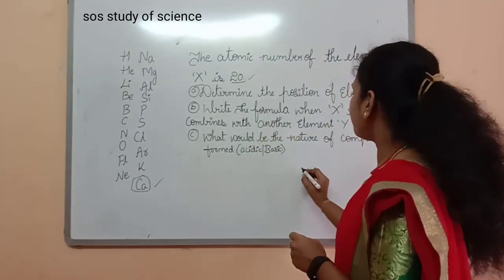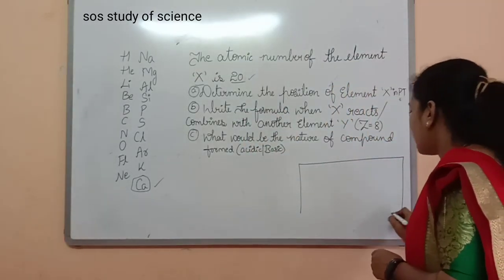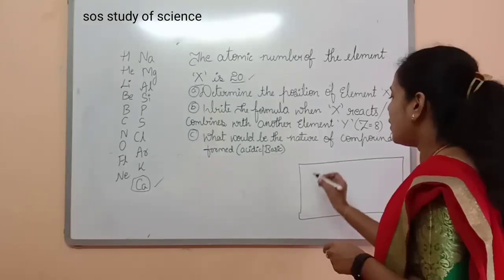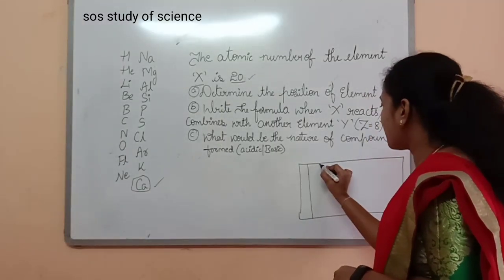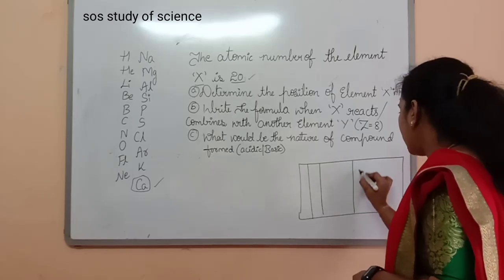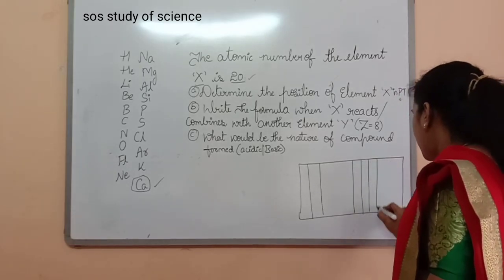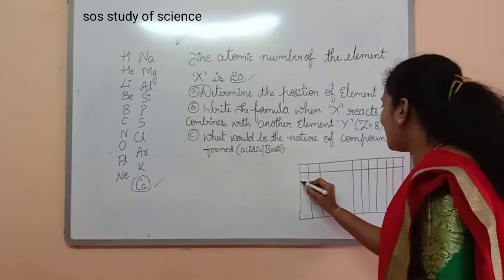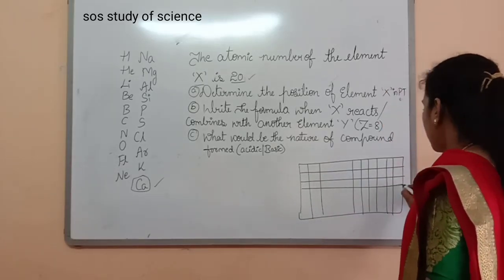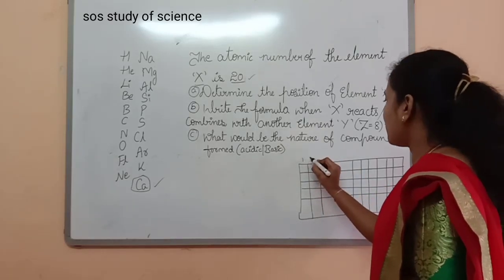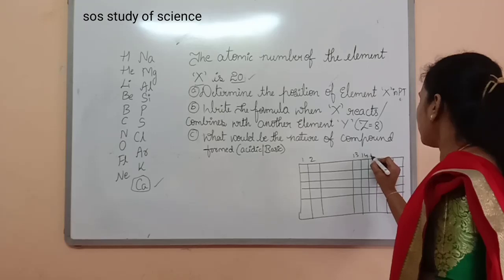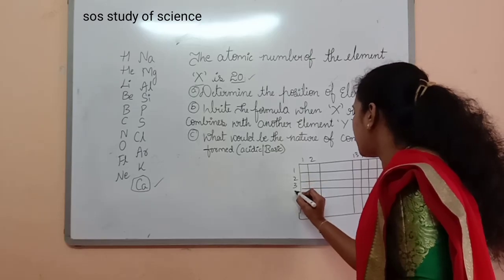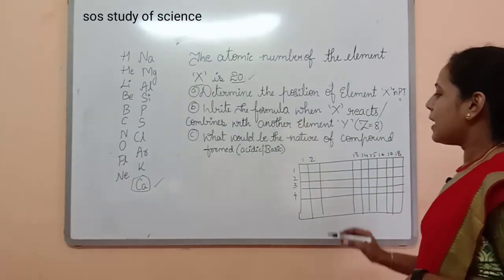In the previous class, we covered the positions of the first 20 elements, which are very simple. The first two groups are groups 1 and 2, then you start from the 13th, 14th, 15th, 16th, 17th, and 18th groups. You also have to learn four periods: 1, 2, 3, and 4. The first element, hydrogen, is in the first group. The second element, helium, is in the 18th group because it is an inert element.